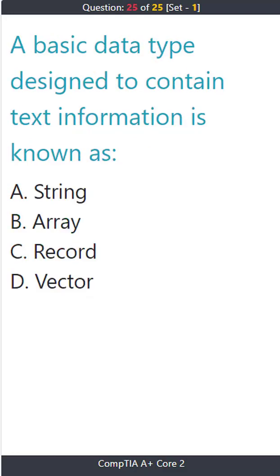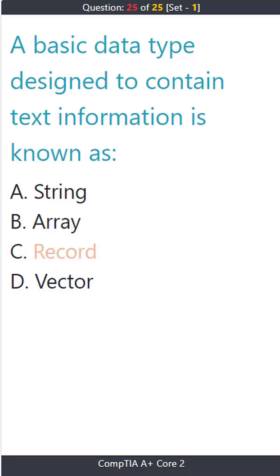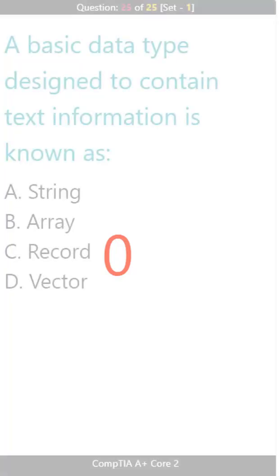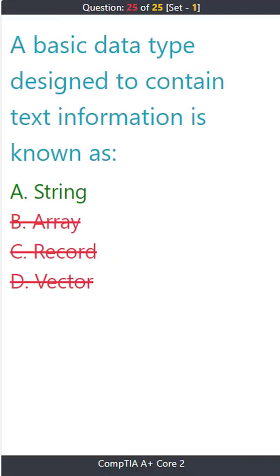Question 25: A basic data type designed to contain text information is known as: A) string. B) array. C) record. D) vector. The correct answer is A: string.